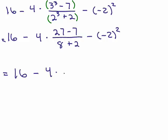So we have 4 times, okay, 27 minus 7 is 20, and 8 plus 2 is 10, all right, getting closer. I still have minus the negative 2 squared.